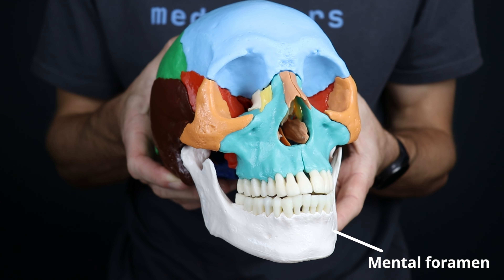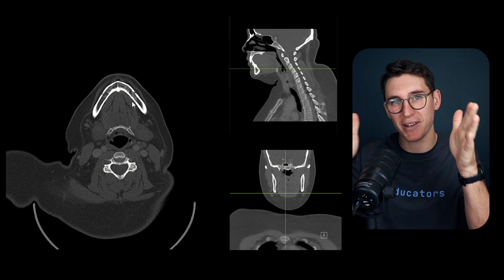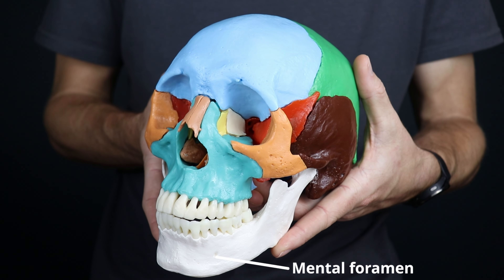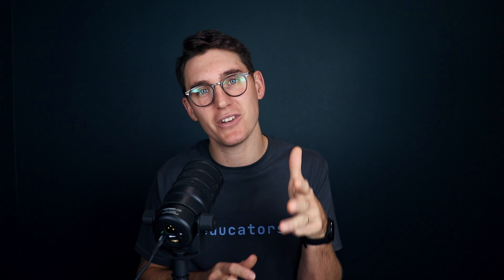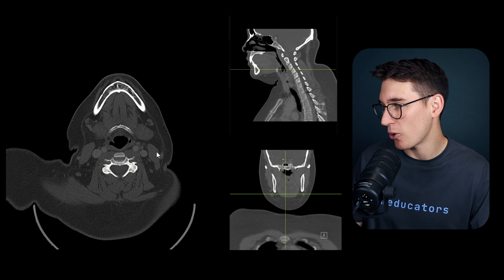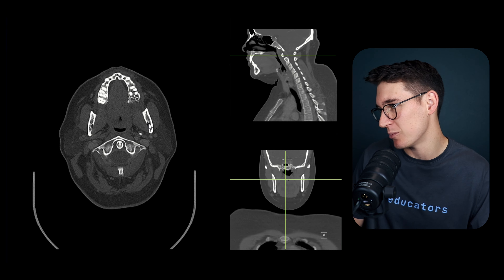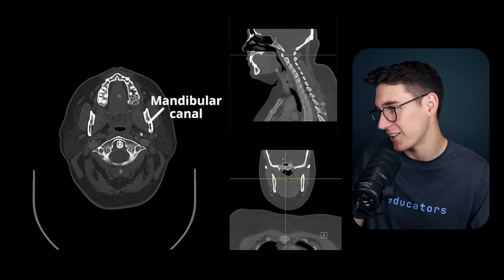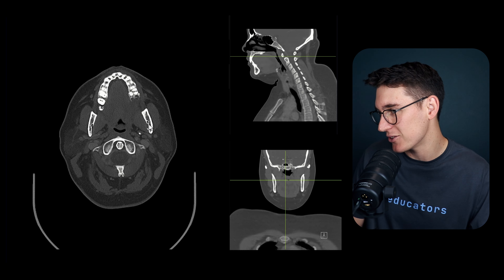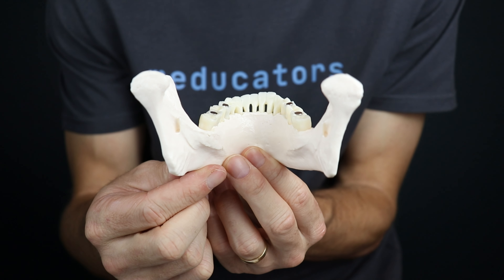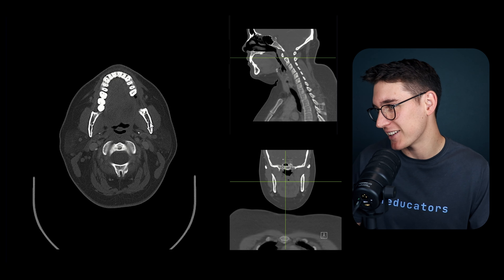We've now seen three foramina on the anterior face: the supraorbital foramen, the infraorbital foramen, and the mental foramen - each corresponding to the three divisions of the trigeminal nerve: the ophthalmic, maxillary, and mandibular divisions. On the medial surface of the mandibular ramus there are two canals - the mandibular canal - where the inferior alveolar nerve travels. The inferior alveolar nerve is also a branch of the mandibular division of the trigeminal nerve. The interior opening is the mandibular foramen, which extends into the mandibular canal.